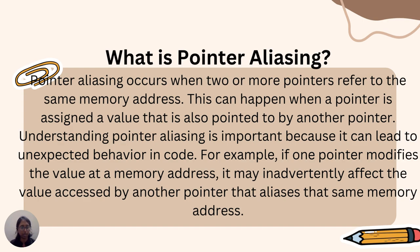What is Pointer Aliasing? Pointer Aliasing occurs when two or more pointers refer to the same memory address. This can happen when a pointer is assigned a value that is also pointed to by another pointer. Understanding Pointer Aliasing is important because it can lead to unexpected behavior in code. For example, if one pointer modifies the value at a memory address, it may inadvertently affect the value accessed by another pointer that aliases the same memory address.